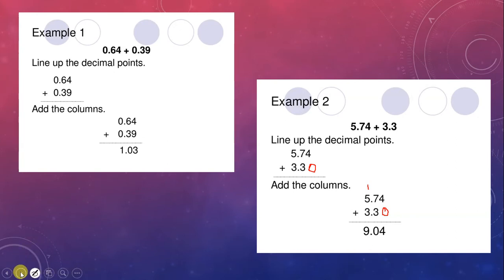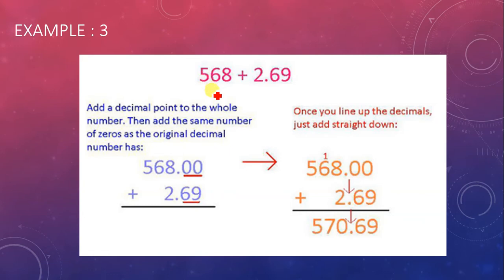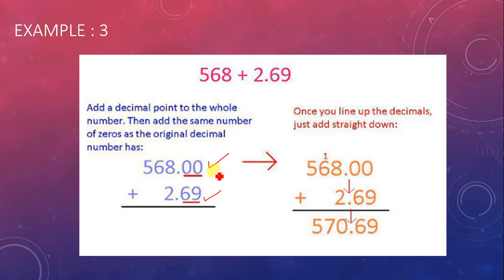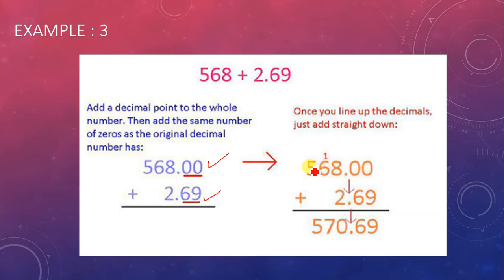Next is a third example: adding a whole number with a decimal number. Add a decimal point to the whole number to make their decimal places equal. Since 2.69 has two decimal places, add two zeros after the decimal point to the whole number. Line up the decimals and add straight down: 0 plus 9 is 9, 0 plus 6 is 6, 8 plus 2 is 10 — carry 1, then 6 plus 1 is 7, and 5. Answer is clear.